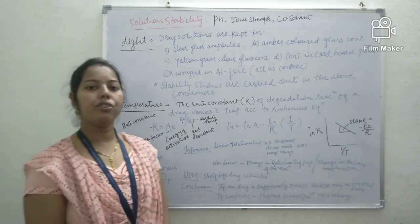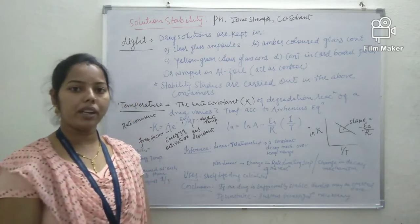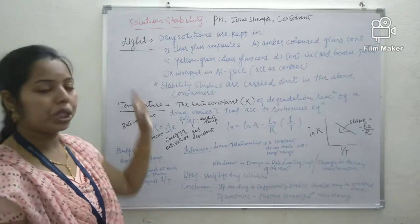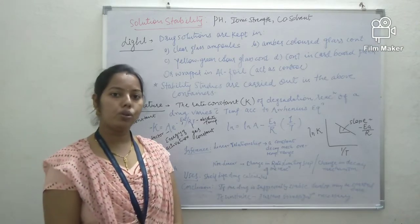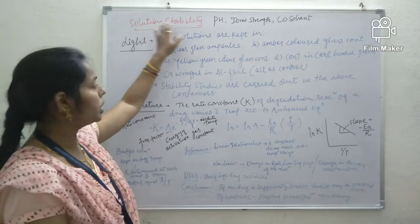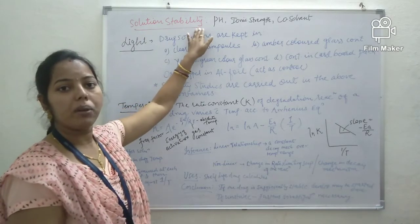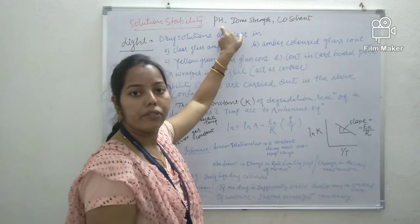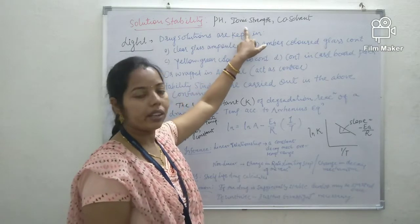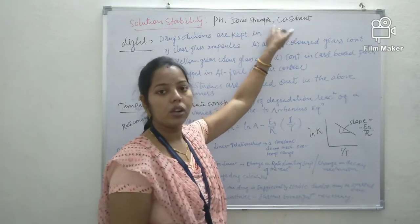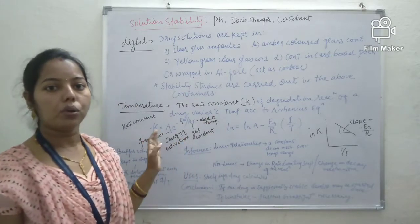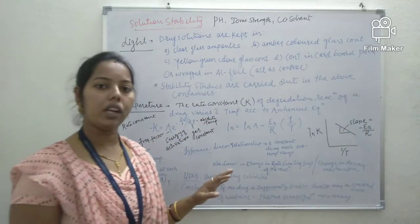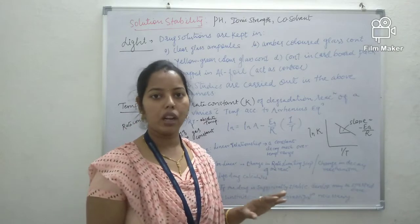In the previous video we had discussed about the stability analysis in solution and solid dosage forms. In solution stability, we already discussed about the effect of pH, ionic strength, and co-solvent onto the stability — how pH, ionic strength, and co-solvent affect the stability of the final product.